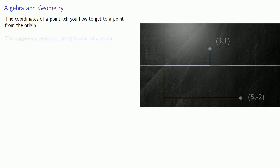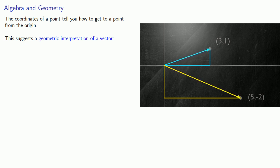This suggests a geometric interpretation of a vector. While we might give directions like 'go 3 units to the right and then 1 unit up,' we're more likely to point in the right direction and say 'go that way for some distance.' This suggests that vectors are things that have both a direction and a distance — we might call them directed distances.